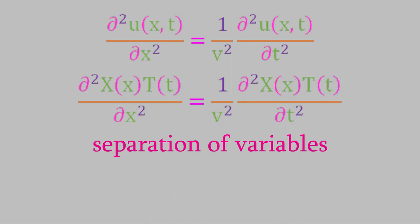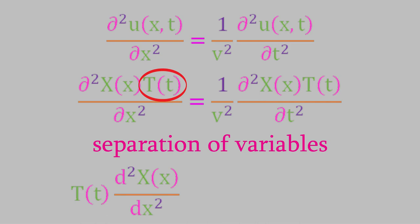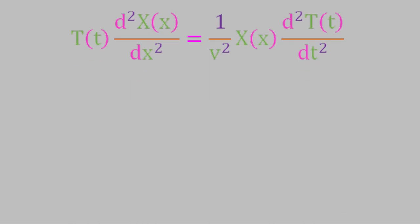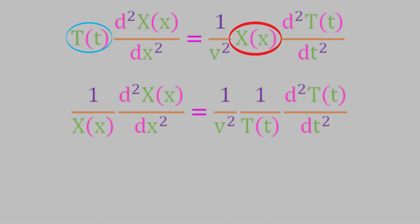To perform the separation, notice that the derivative on the left side is with respect to x, so we treat the function T as a constant and pull it out of that differential. Similarly, on the right side, the function X is treated like a constant in its derivative and pulled out. After dividing both sides by both functions X and T, we achieve the result where the left side of the equation contains only the variable x and the right side contains only t — the separation of variables has been accomplished.